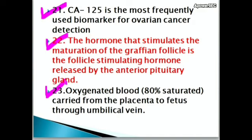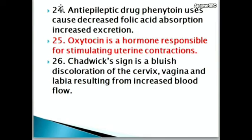Oxygenated blood, 80% saturated, is carried from the placenta to the fetus through the umbilical vein. Antiepileptic drug phenytoin use causes decreased folic acid absorption and increased excretion. Oxytocin is a hormone responsible for stimulating uterine contractions.